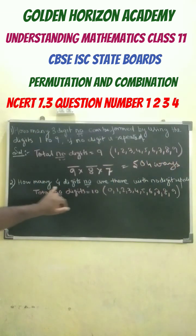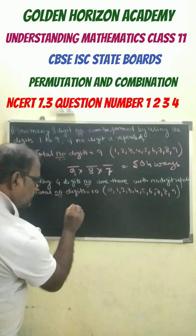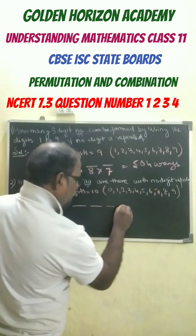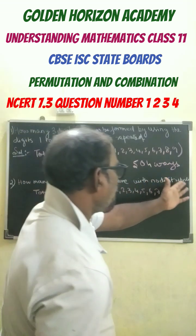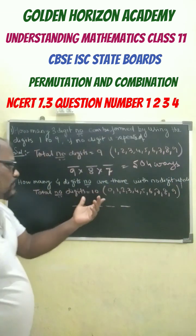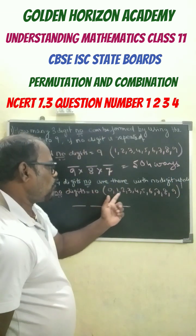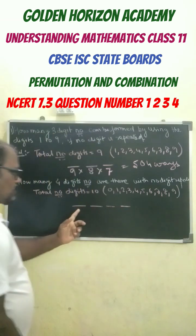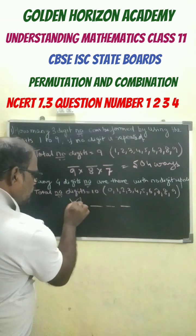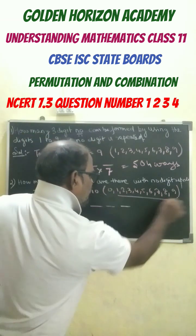In question number two, how many four-digit numbers are there with no digits repeated? Let the four-digit number be positions one, two, three, four. Total digits are 0, 1, 2 through 9 - that's ten digits. In the very first place we cannot put zero, so the number of ways is nine.